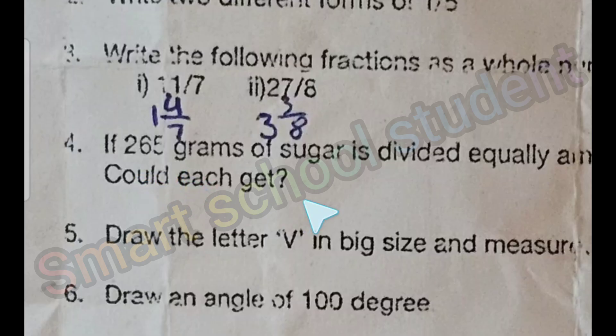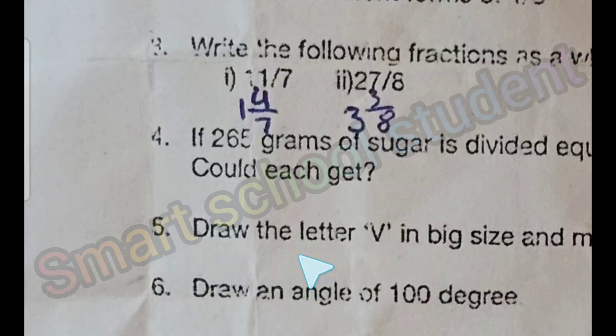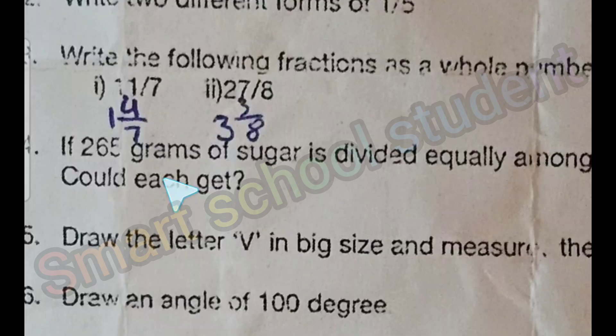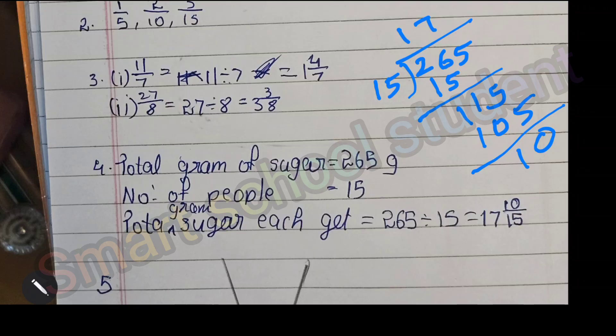If 265 grams of sugar is divided equally among 15 people, how much kilogram of sugar could each get? That is the question. 265 grams of sugar divided by 15, so 17 and 10 by 15.